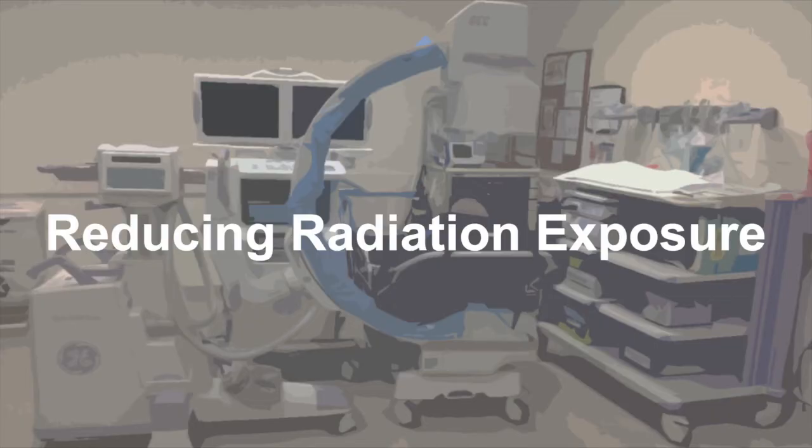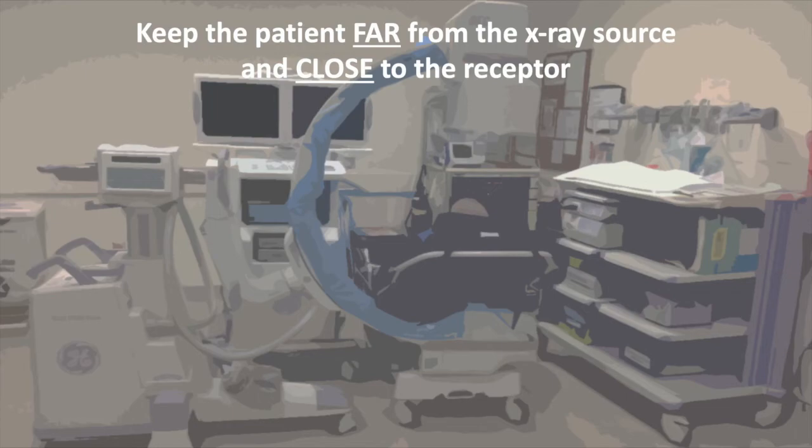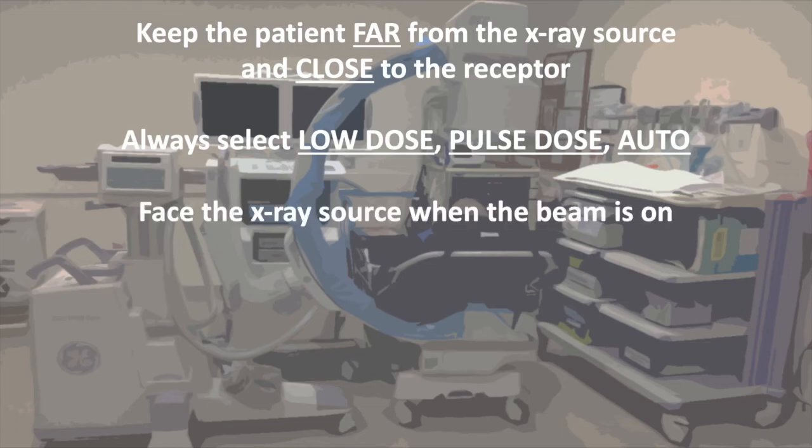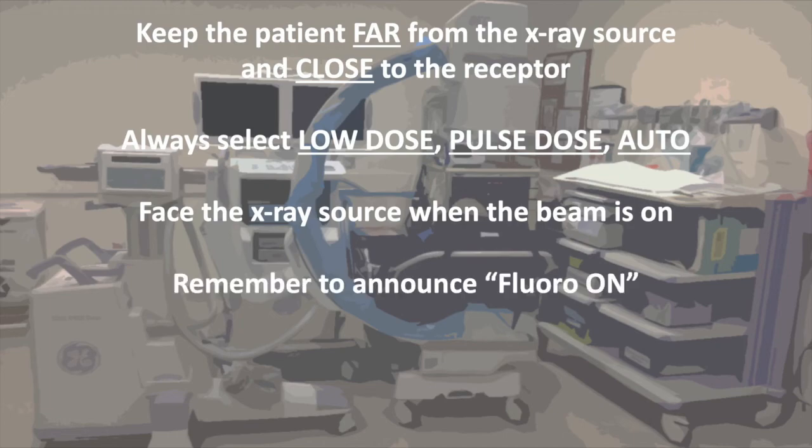In this video, we have reviewed several ways you can minimize radiation exposure for your patients, yourself, and others in the bronch suite. Remember, the patient should be at least 30 centimeters from the X-ray source and as close to the receptor as possible. The fluoroscope should be set to low dose, pulse dose, and automatic exposure mode. Ensure all staff know to face the X-ray source when the beam is on and remember, loudly announce fluoro on every time you use the fluoro beam. Most importantly, minimizing the time your foot stays on the pedal is the biggest way to reduce radiation exposure for both your patient and yourself.